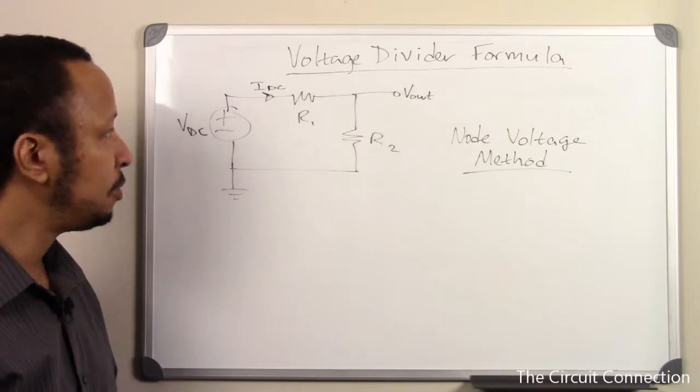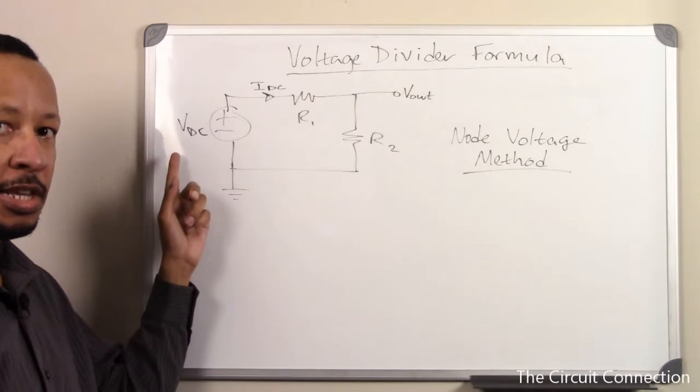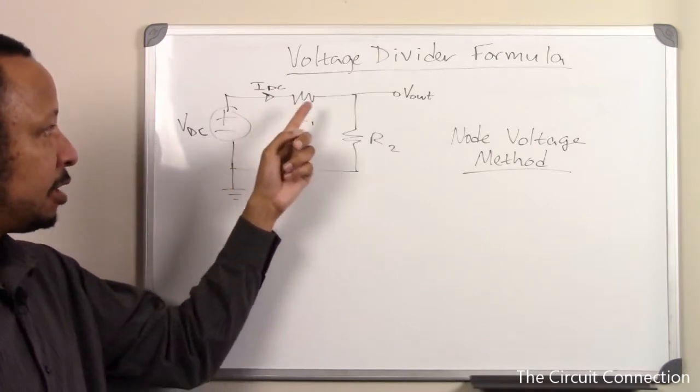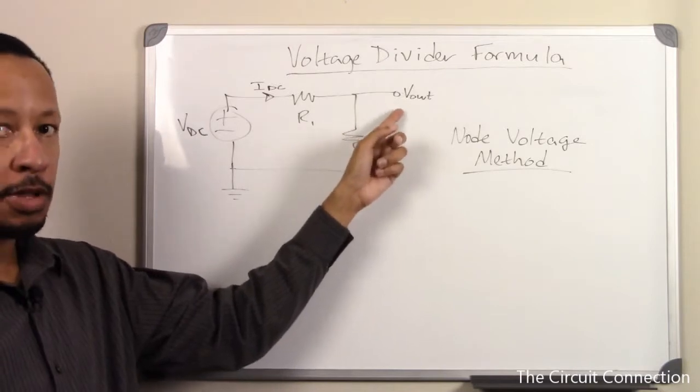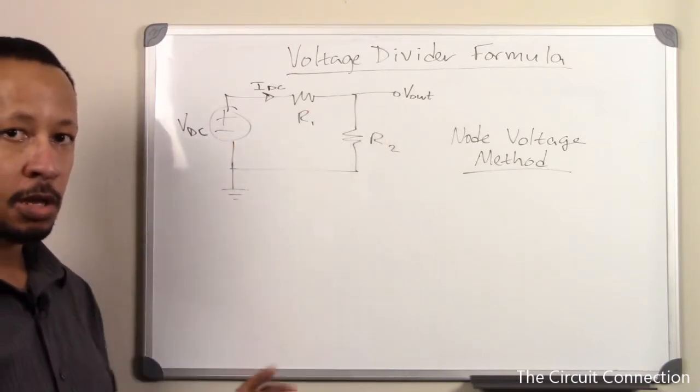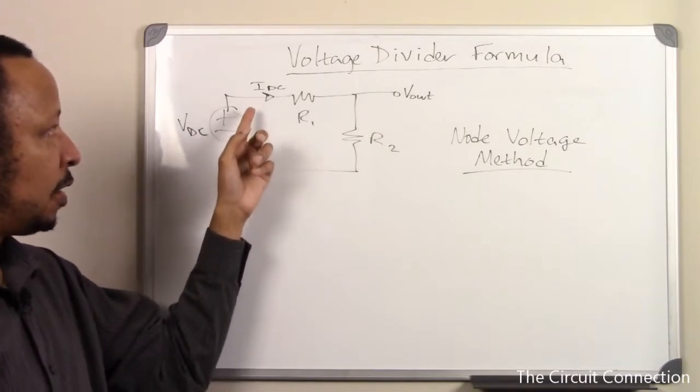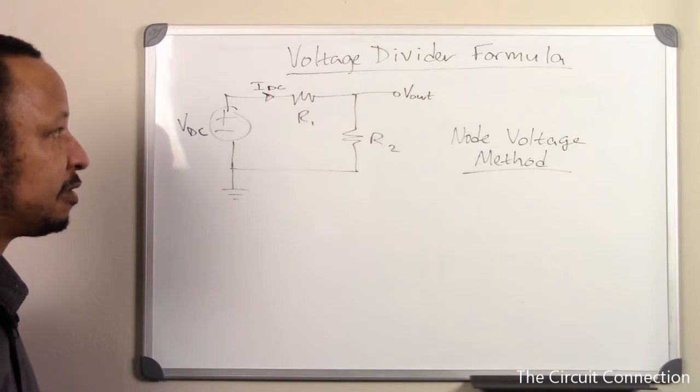So to begin with, we have a circuit over here with a voltage source VDC in series with R1 and R2. What we want to find out is what is Vout given this circuit network, and we have IDC here which is coming from VDC.